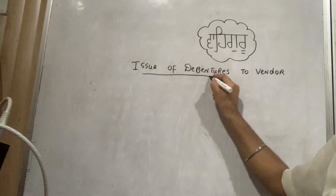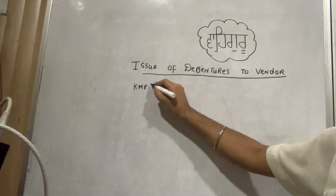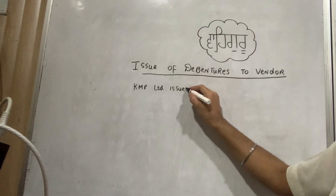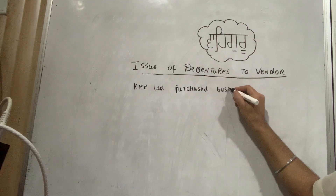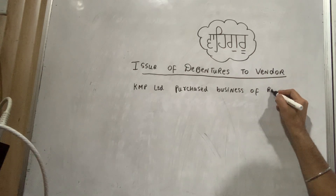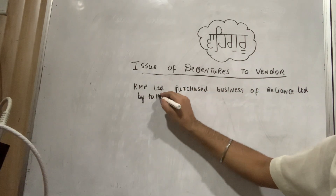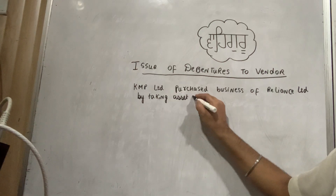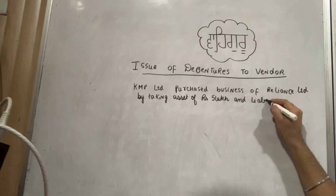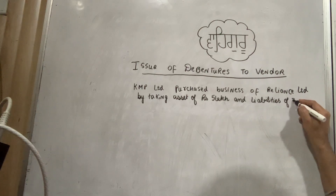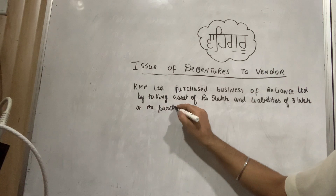Remember, vendor is the synonym for seller. So questions will come to you like this: KMP Limited purchased the business of Reliance Limited by taking over assets of rupees 5 lakh and liabilities of rupees 3 lakh at the purchase consideration of rupees 6 lakh.